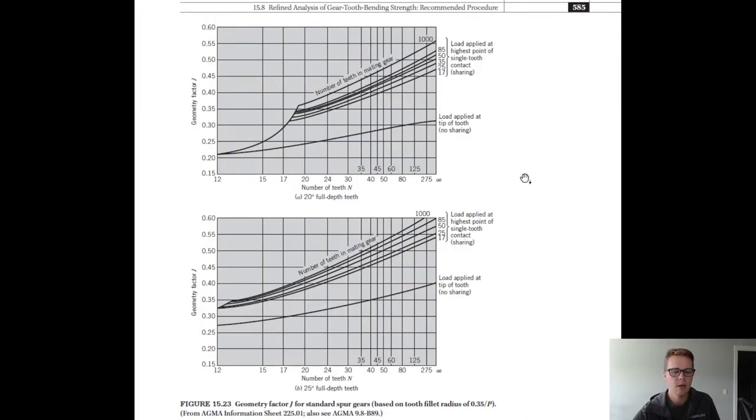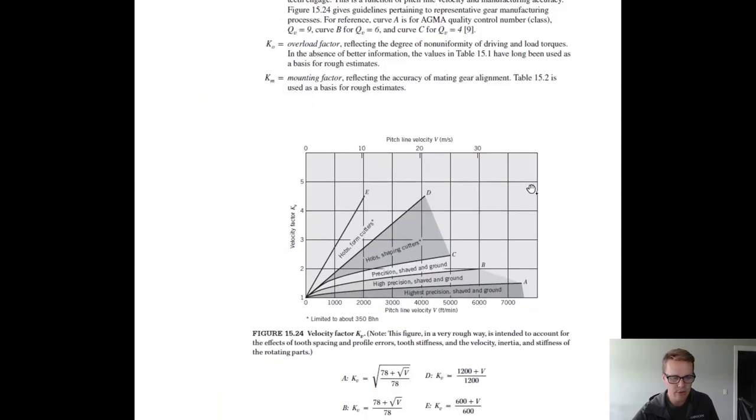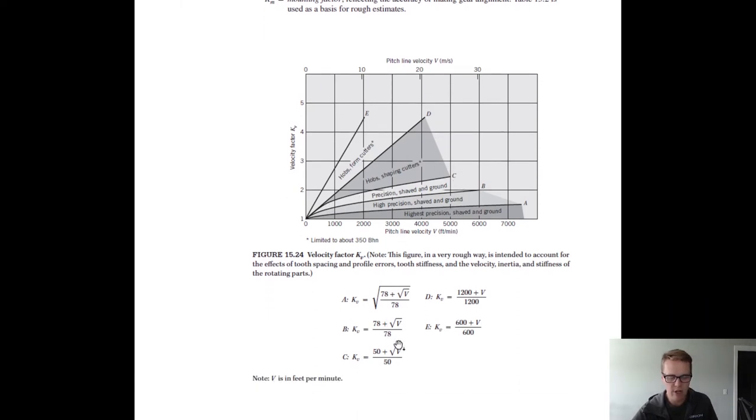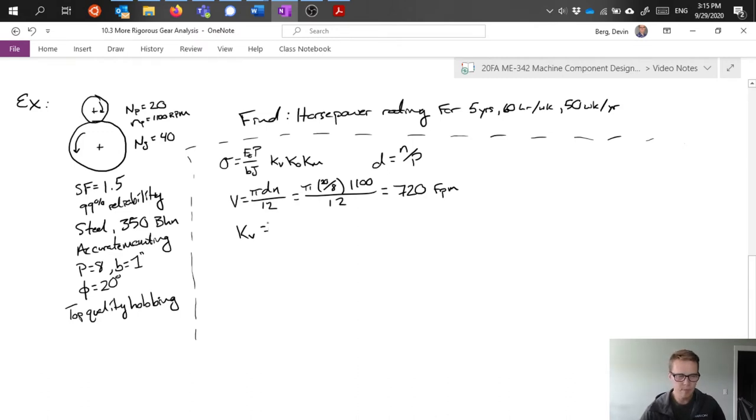Now we need to come up with kV. If we go to our charts in the book, we can find kV here. This is figure 15.24. We said we had a top quality hobbing operation. So there's a hobs operation here. We'll assume we're on the best line for that, which would be the top quality, line c. Just below the figure there's an equation given for line c, which is 50 plus square root of the pitch line velocity over 50. That comes out to be 1.54 for this particular setup.